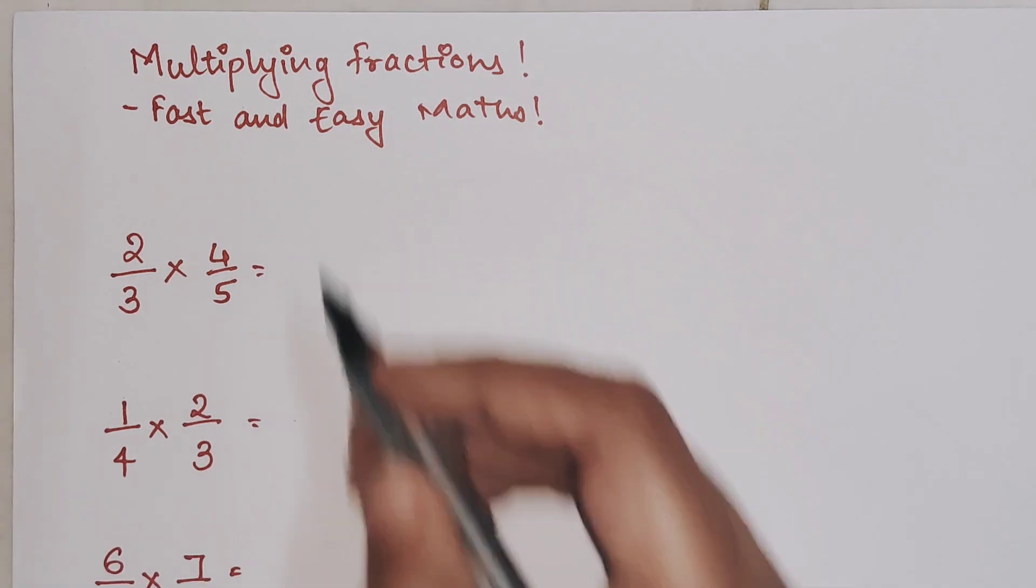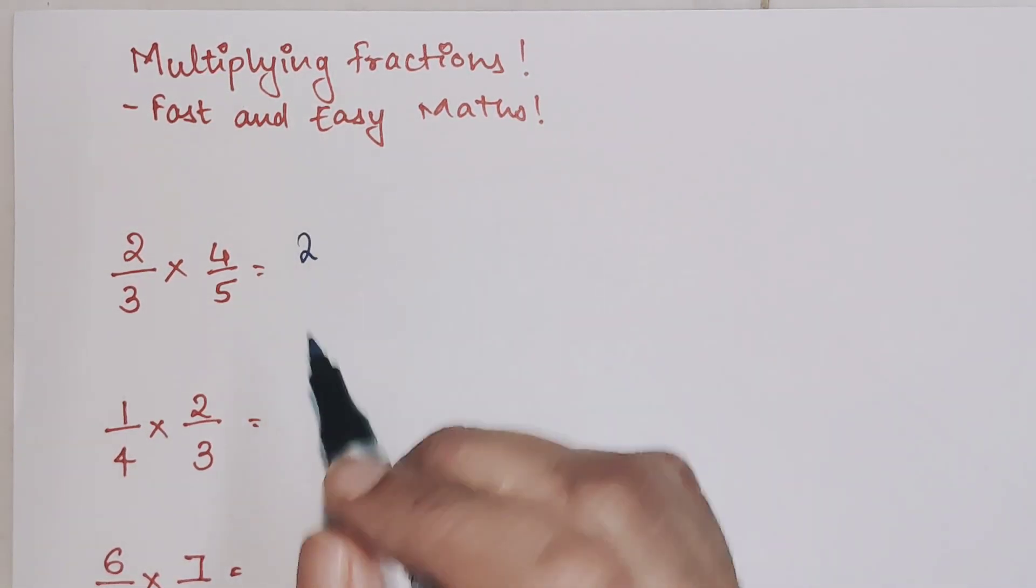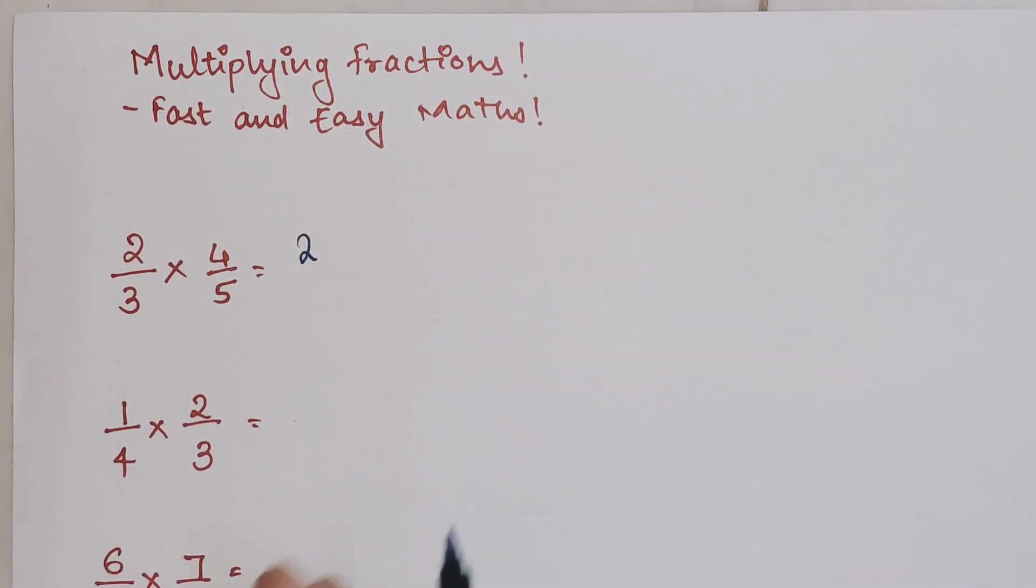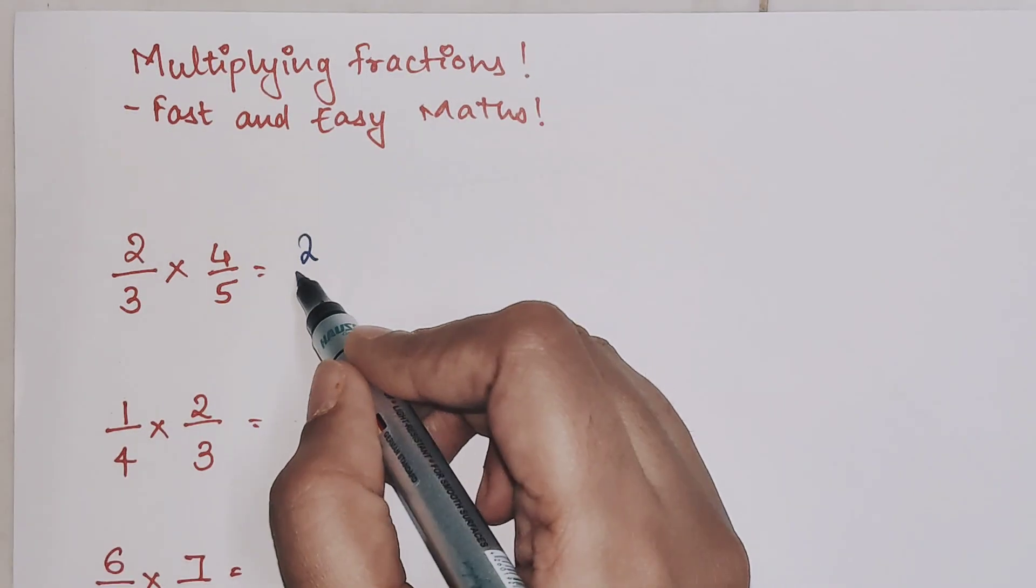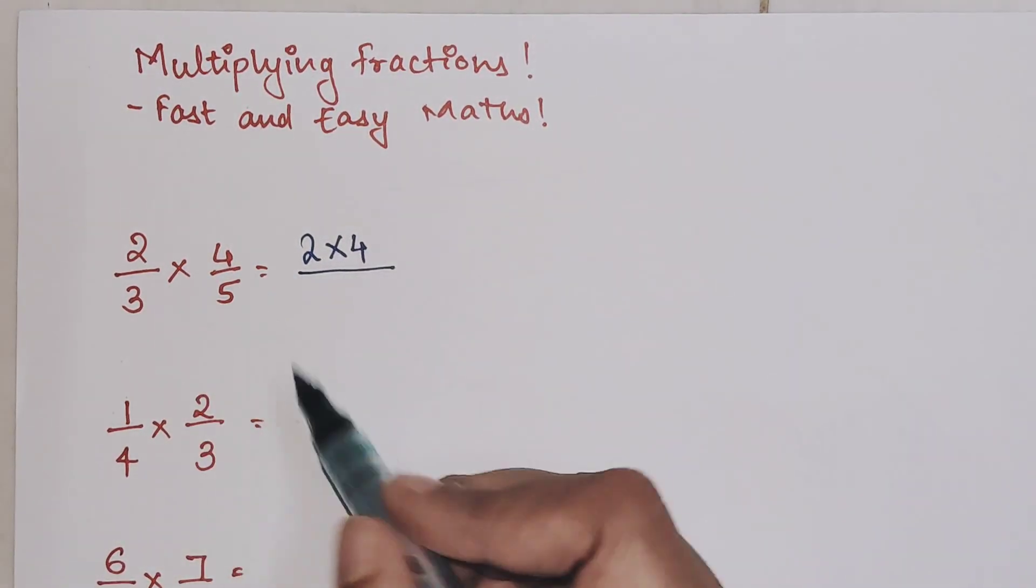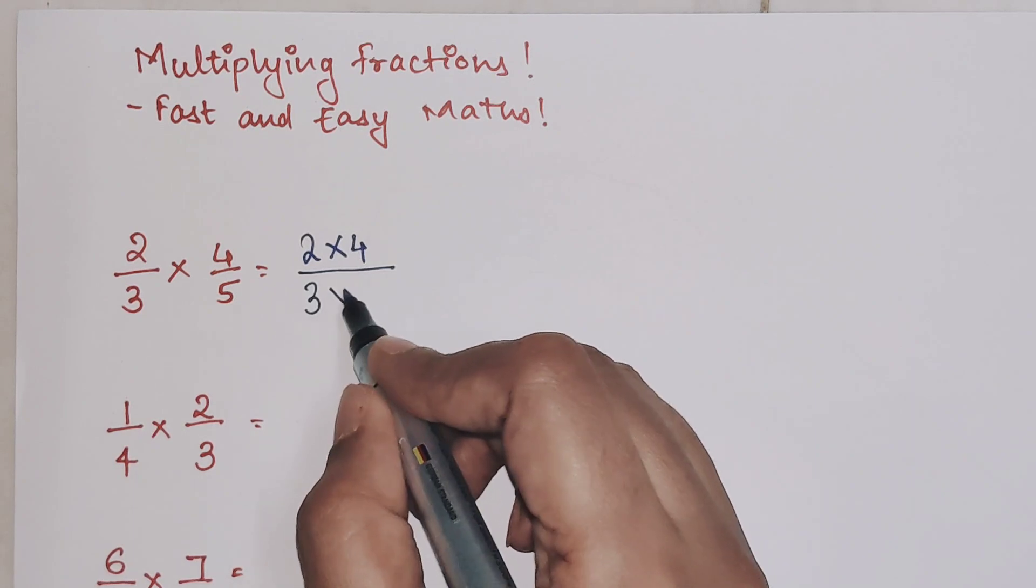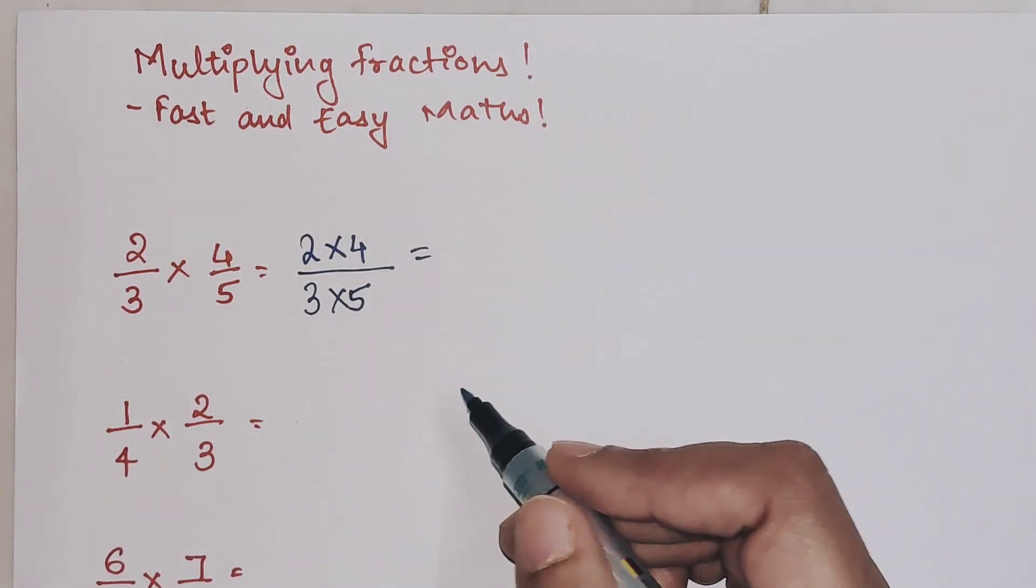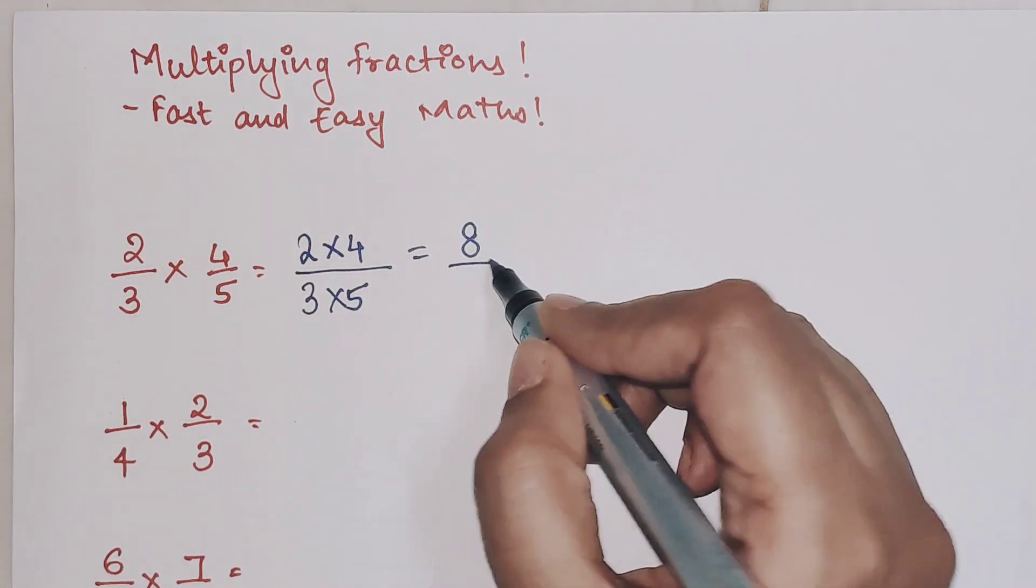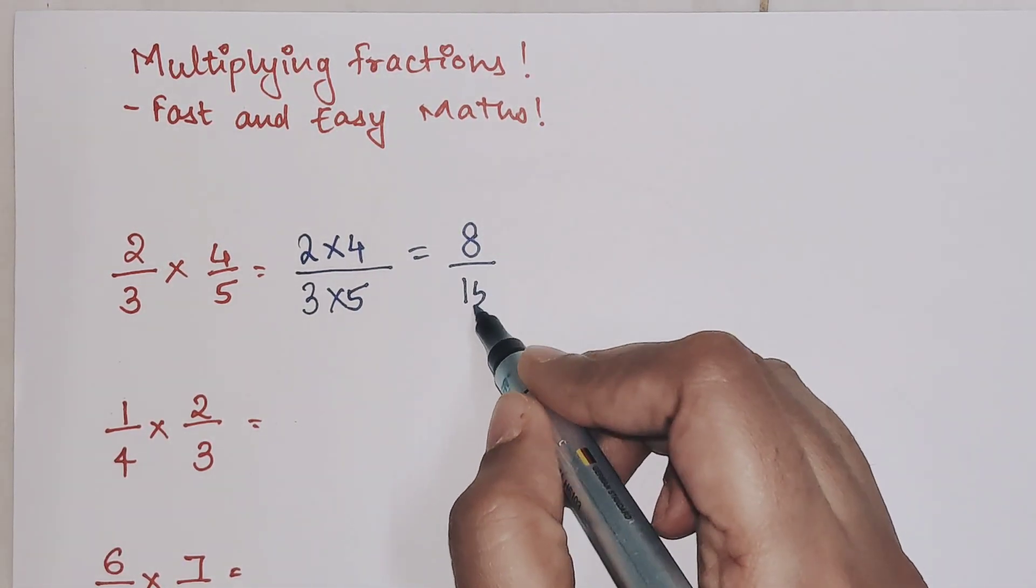Let's look at the first one. Please understand, if there is a multiplication of two fractions, the answer will also be a fraction. You multiply the numerator with the numerator and the denominator with the denominator. So 2 into 4 is 8 and 3 into 5 is 15.